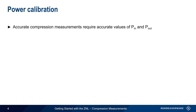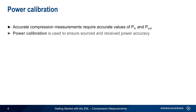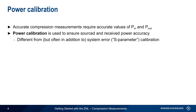Making accurate compression measurements requires accurate values for both P in and P out, and therefore a special type of calibration called a power calibration is needed to ensure the accuracy of the sourced and received power. Note that power calibration is different from the more common system error, or S-parameter calibration, but these are often used together to improve measurement accuracy.